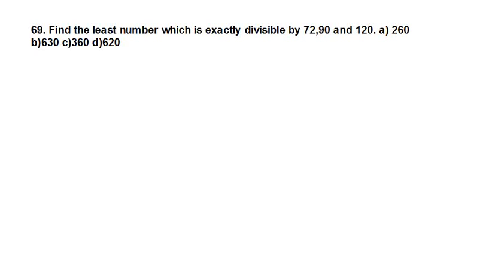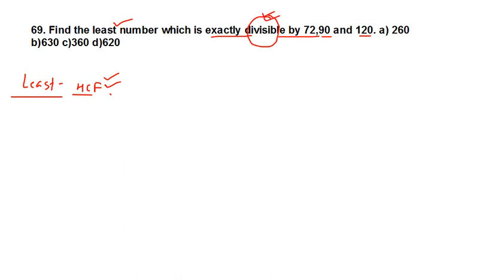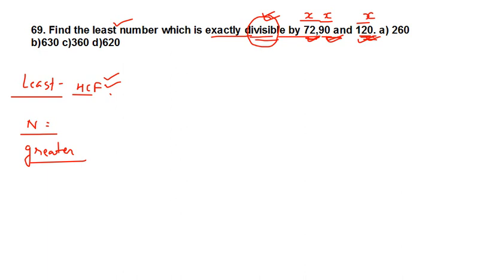Next problem: find the least number which is exactly divisible by 72, 90 and 120. Here they are asking for the least number. When they ask for the least number, do not blindly start calculating the HCF. Pay attention to the word 'divisible' — you have to find a number which is divisible by these numbers, meaning that number should be in the numerator, so it is greater than 72, 90 and 120. Whenever the word is 'divisible', we find the LCM, not HCF.